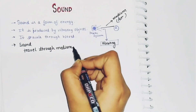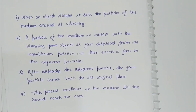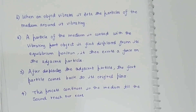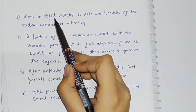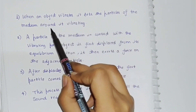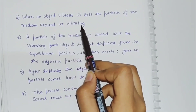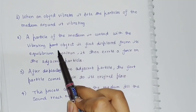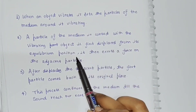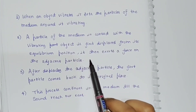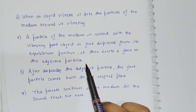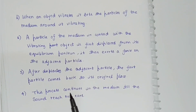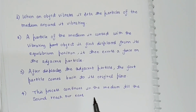Now we will understand how sound travels from a person. When an object vibrates, it sets the particles of the medium around it vibrating. So when an object vibrates, it disturbs its adjacent particles.